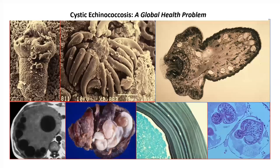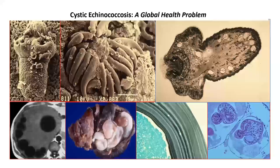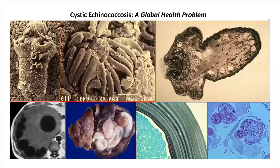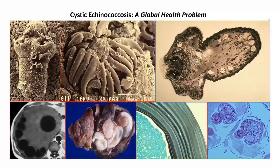This scanning electron micrograph from our lab shows the scolex with hooklets beautifully visible, and a transverse section of the worm. In humans, the disease is cystic, occurring in the liver — 70% of cases — the lung — 20% — and other organs. The disease basically presents as an incidental mass lesion on routine imaging. It grows around one centimeter per year and if it grows large enough, causes pressure on bile ducts, portal veins, or bronchi.